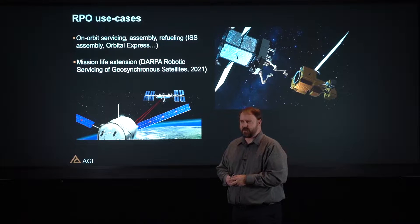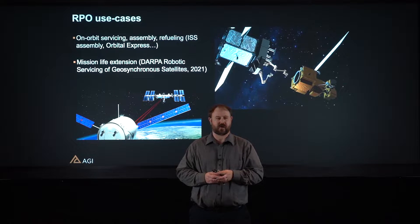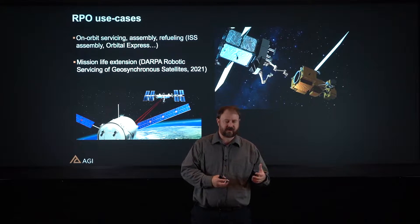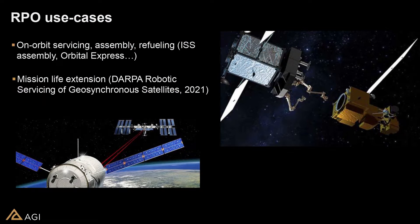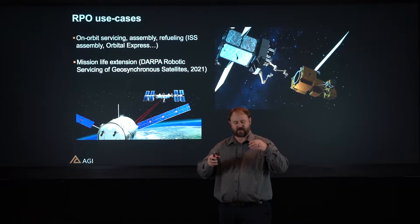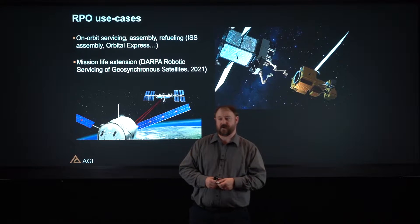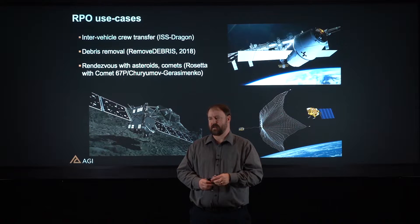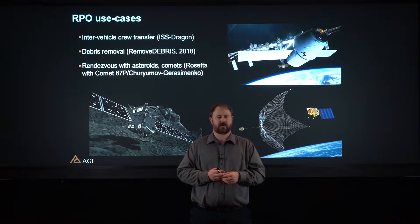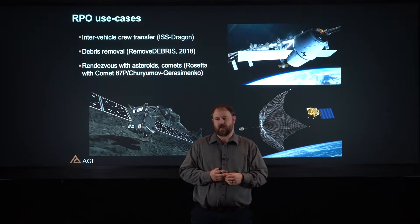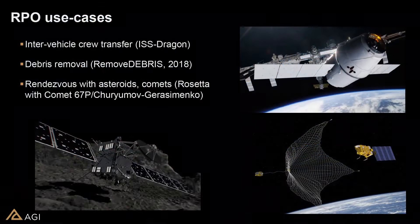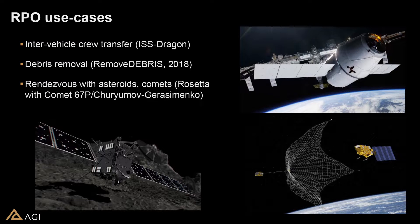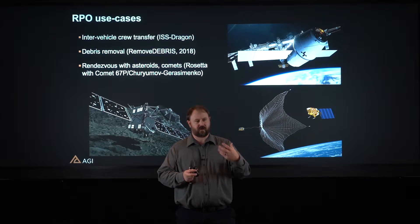There are a number of use cases in this regime. In terms of rendezvous and prox ops use cases, we're always talking about things like on-orbit servicing and mission life extension. One of the classic examples of an RPO use case was the servicing of the Hubble Space Telescope — the mirror wasn't quite right and the astronauts went back and fixed it, visiting a number of times. There's also the notion of transferring things between vehicles, like bringing astronauts to the space station. A more recent use case is debris removal — the Remove Debris mission in 2018 demonstrated the ability to pick up space junk by throwing out a net and catching something.